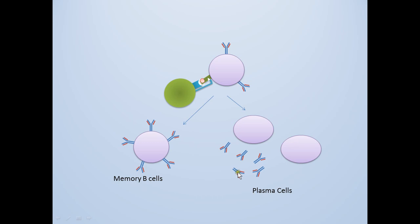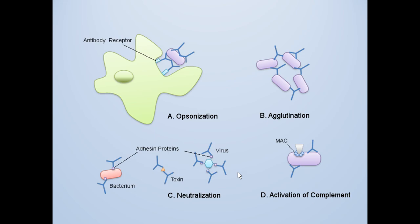These antibodies are used to help clear the pathogen. Antibodies do this by binding to the antigen and tagging it for opsonization by phagocytes, or neutralizing it from binding to target tissues. In some cases, it will cause the antigen to agglutinate. And finally, some antibodies will activate the classical path of complement.